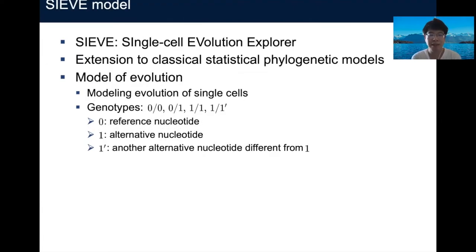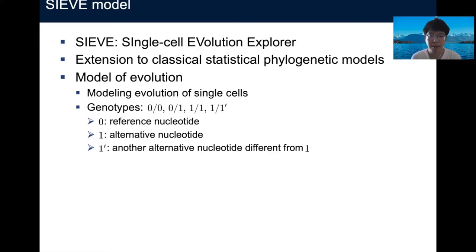Now let's move on to our SCIF model, which is a shorthand for single-cell evolution explorer. Due to the properties of the single-cell DNA sequencing data that we use, SCIF is an extension to classical statistical phylogenetic models. SCIF contains a model of evolution where we model the evolution of single cells. We assume a finite sites assumption and consider the following genotypes: 0/0, 0/1, 1/1, and 1/1-prime. Here, 0 represents reference nucleotides, 1 represents alternative nucleotides, and 1-prime represents another alternative nucleotide different from 1.